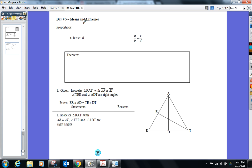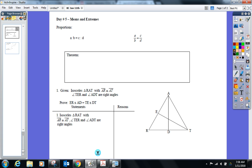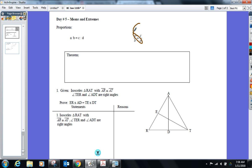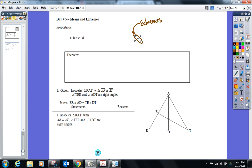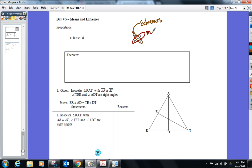Those names are the means and the extremes. The means and the extremes. So I'll start with this one right over here: a over b equals c over d. When I cross multiply a and d, those are called my extremes. And when I cross multiply b and c, those are referred to as the means.